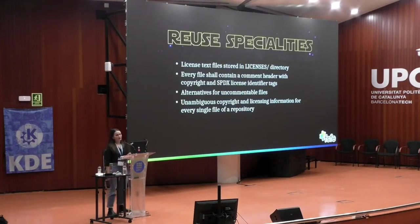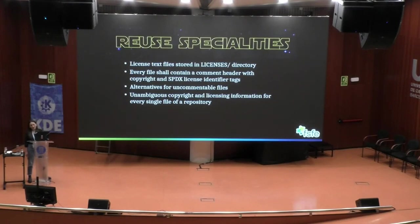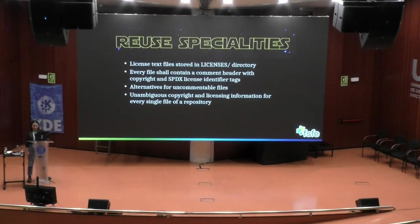So what is so special about REUSE? We have the license text — every single license used in the project, regardless of whether it's only for pictures or one piece of code, is stored in the licenses directory. Every file contains legal information through a comment header, making use of SPDX-License-Identifier tags as well as SPDX-FileCopyrightText tags. REUSE has alternatives for files you cannot comment, and in the long run it aims to make unambiguous the way we display copyright and license information, because every file of our repository will contain this information.